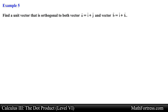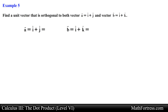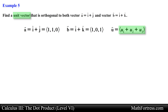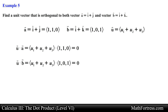Let's move to the final example. Find a unit vector that is orthogonal to both vector a and vector b. We want to find a unit vector perpendicular to both vectors. Let's rewrite vector a and vector b in component form. Next we write our unit vector in component form with unknown components u sub 1, u sub 2, and u sub 3. Since this unit vector must be orthogonal to vector a and vector b, let's compute each dot product and set it equal to 0.